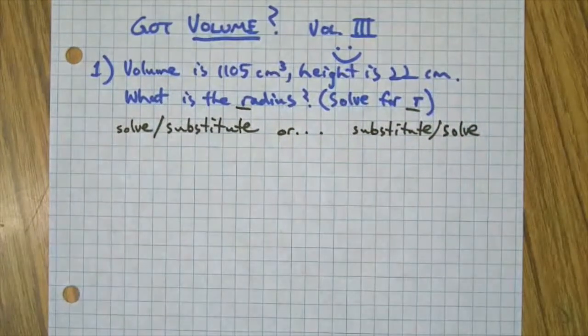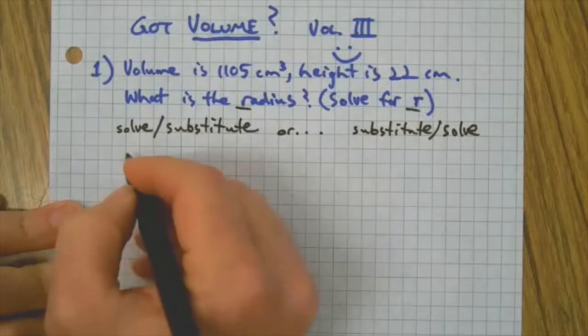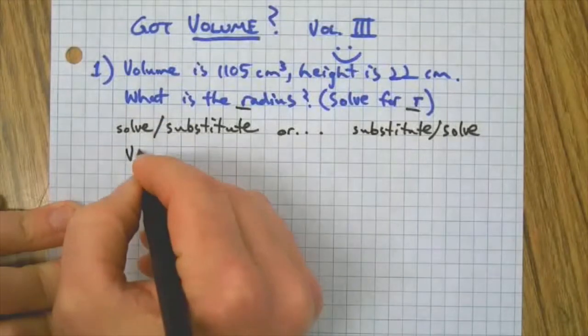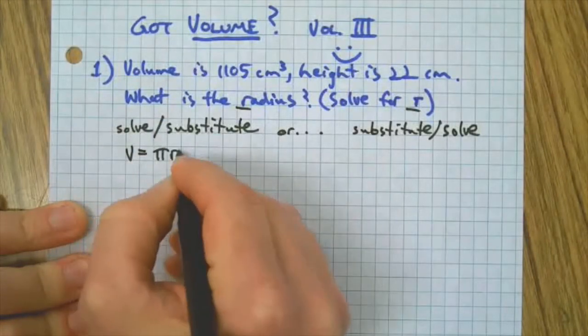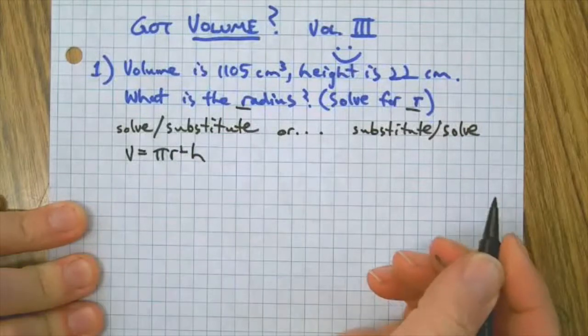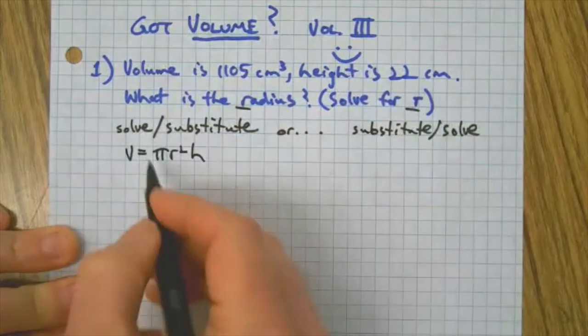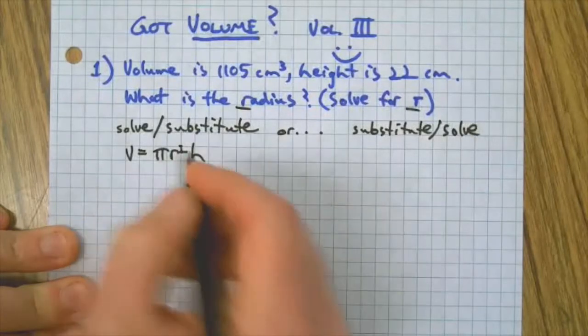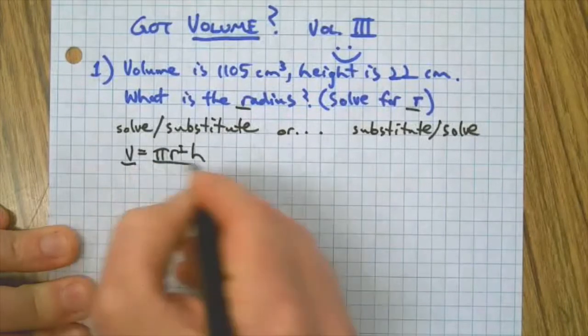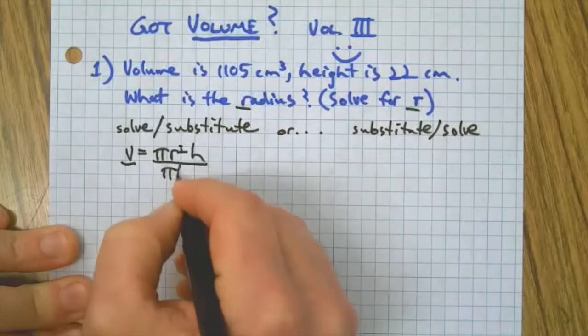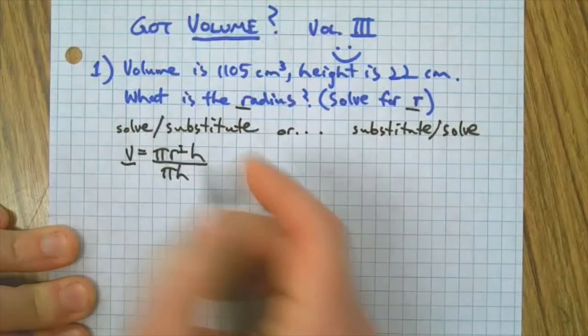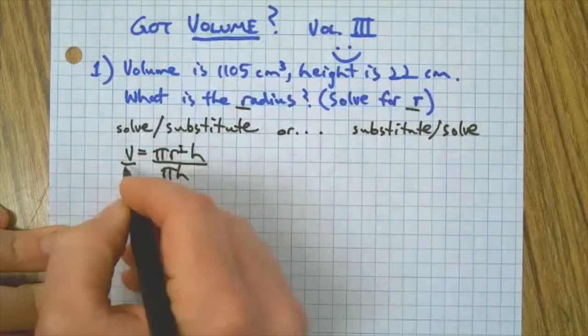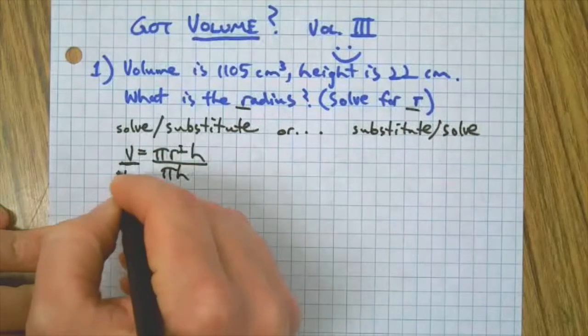There's your standard formula for volume of a cylinder: V = πr²h. That's pi times the radius squared—that's a two—times the height. We're going to isolate the r by using the giant one method. We're dividing out the coefficients.